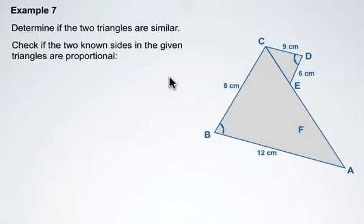We're going to check if the two known sides in the given triangles are proportional. Now there's two methods that we're going to take a look at to try and solve to see if these two triangles are similar.